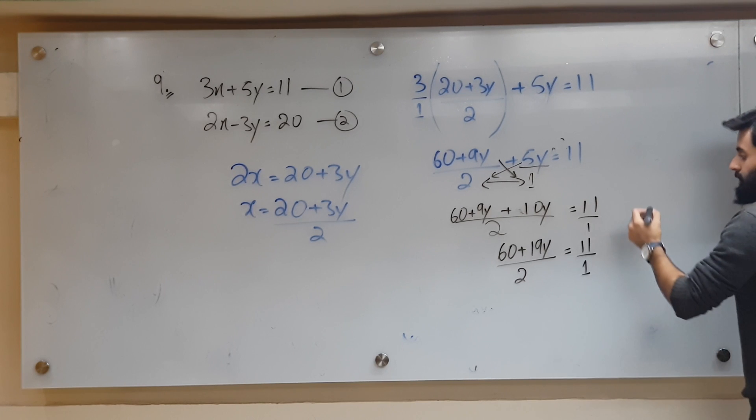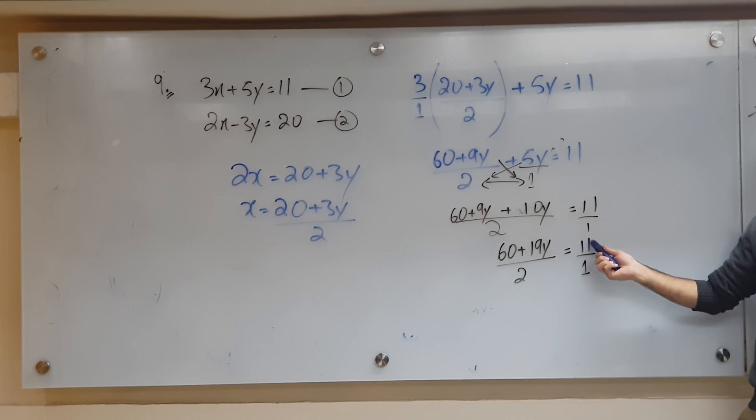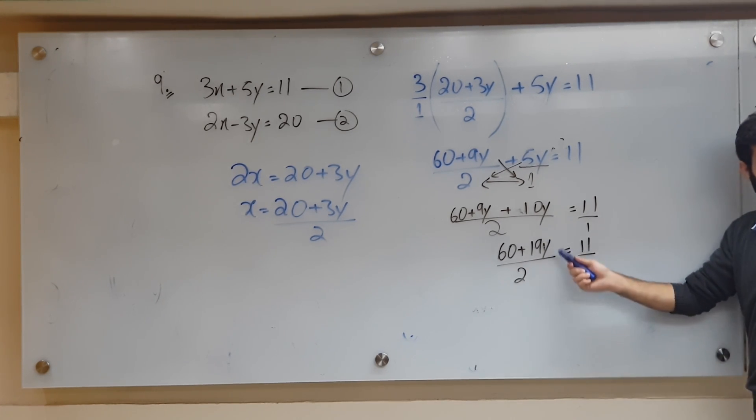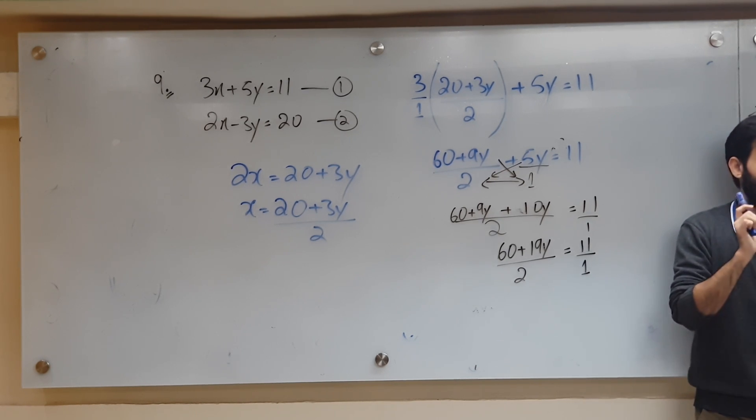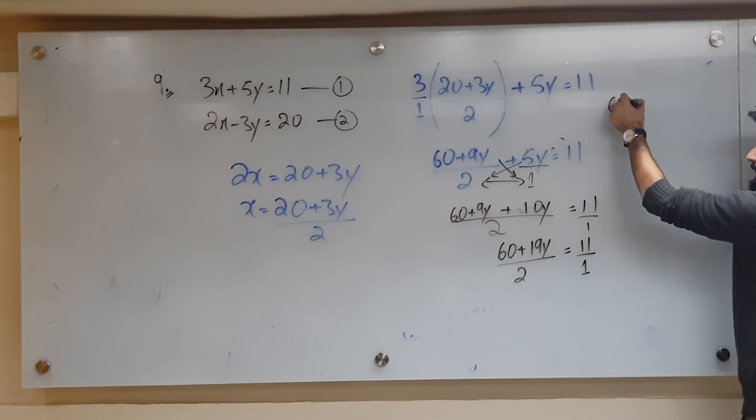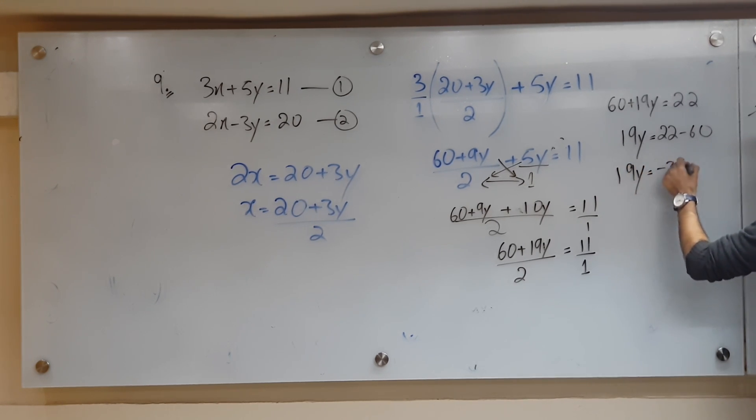What's 60 plus 19y into 1? Cross multiply. 1 will go there, 2 will go there. Whenever you have an equals to sign in between, what do we do? We cross multiply. So 60 plus 19y will stay, 60 plus 19y equals to 22. Let's not use a calculator. 19y is equal to 22 minus 60, which is minus 38. And 22 minus 60 is minus 38. y is equal to minus 38 over 19, which is equal to minus 2. Are we done?